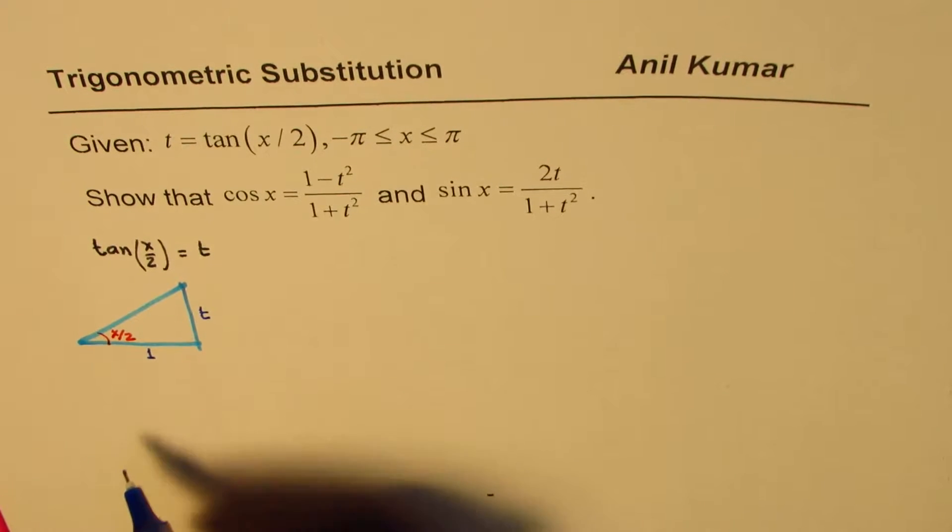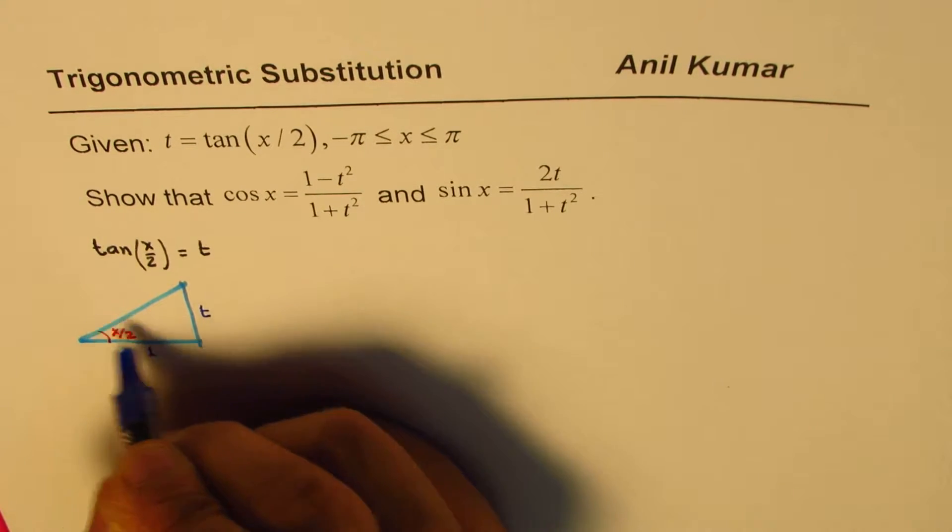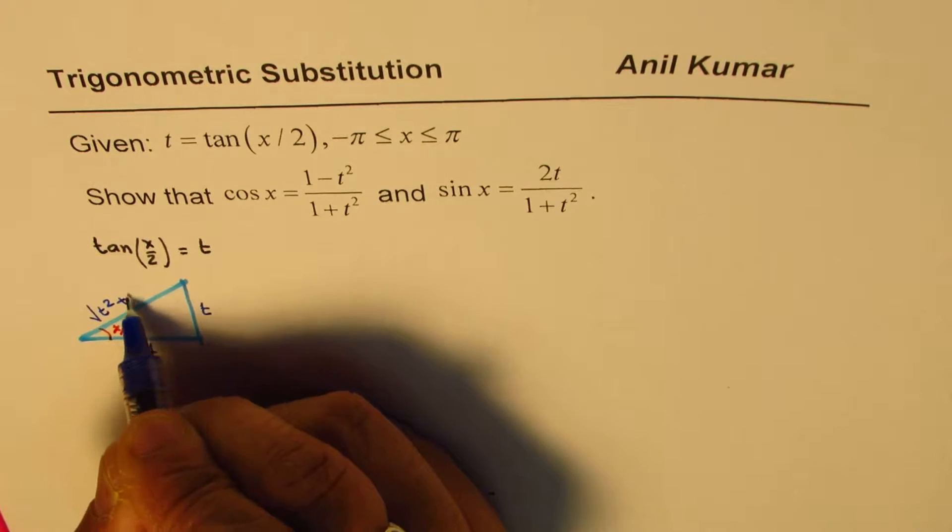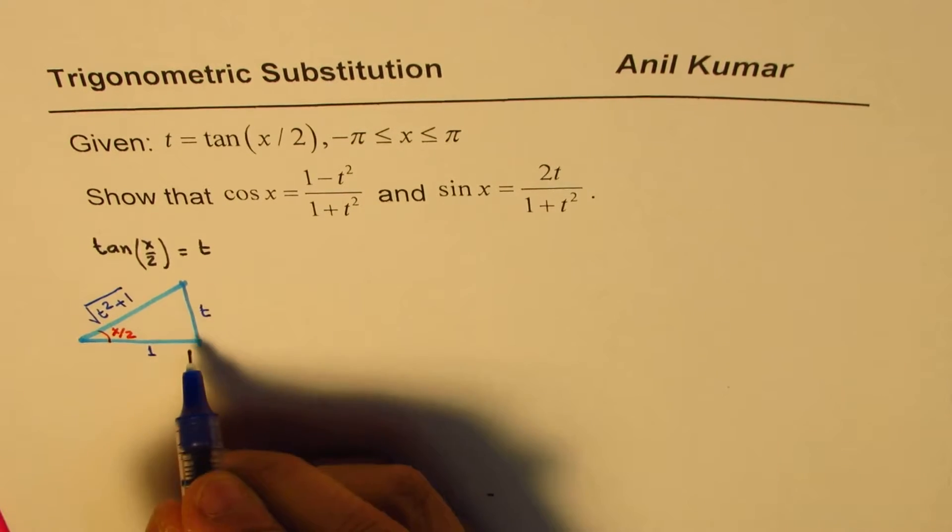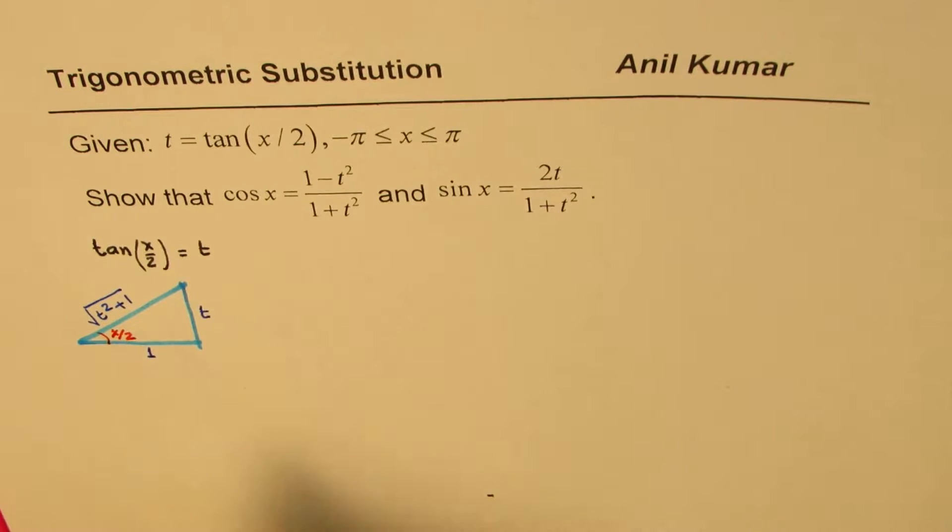In that case, what is going to be the hypotenuse? It will be square root of t² plus 1. That is going to be the hypotenuse when we know this is a right triangle, Pythagorean theorem.